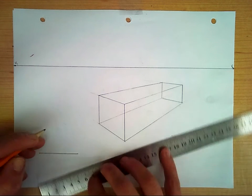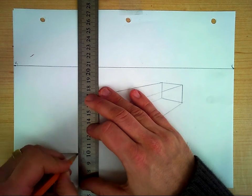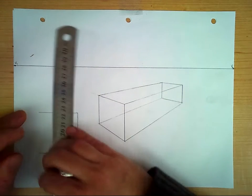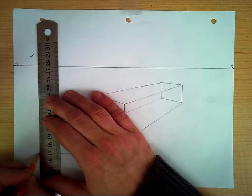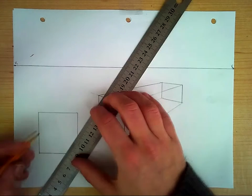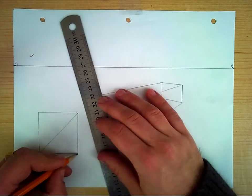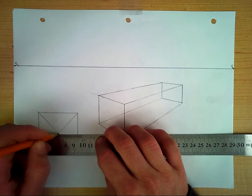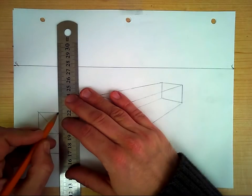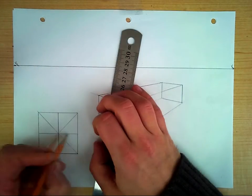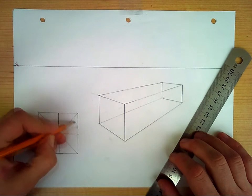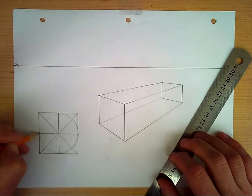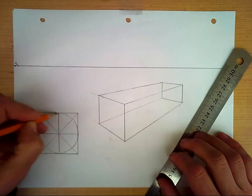I'm going to draw a perfect square to demonstrate what we're going for. We're going to do an X through that square, and then through the center point of the X, we're going to divide each side in half.